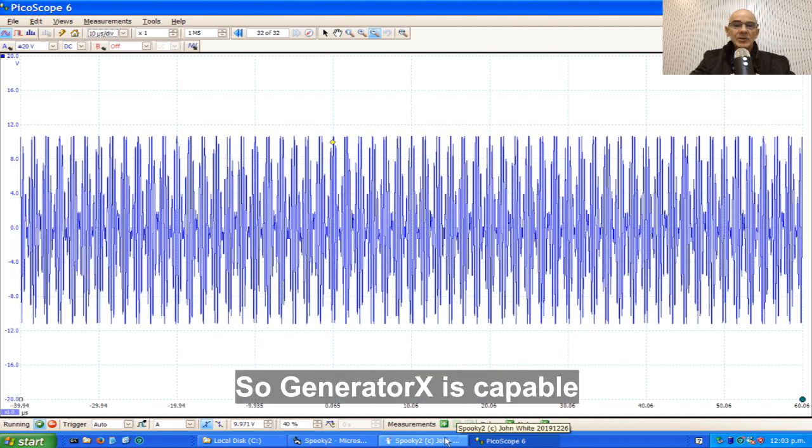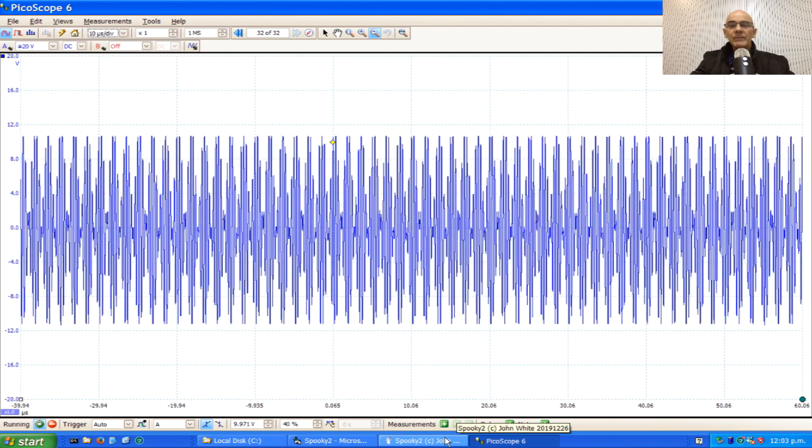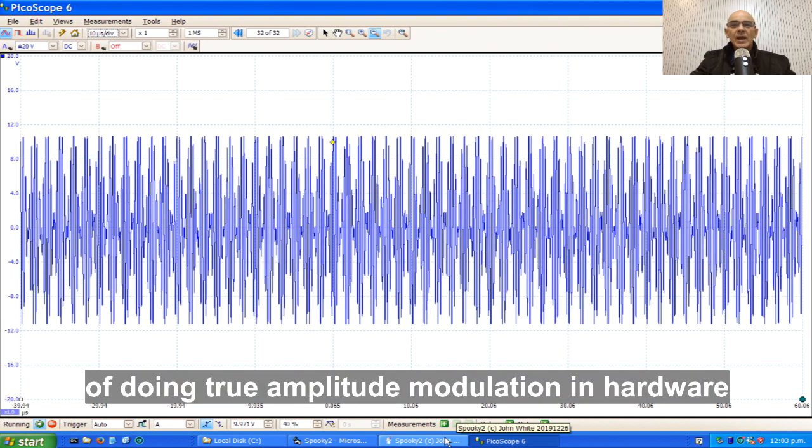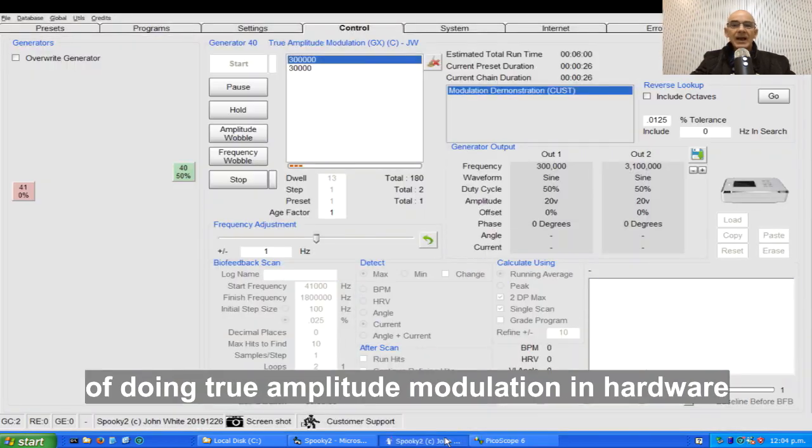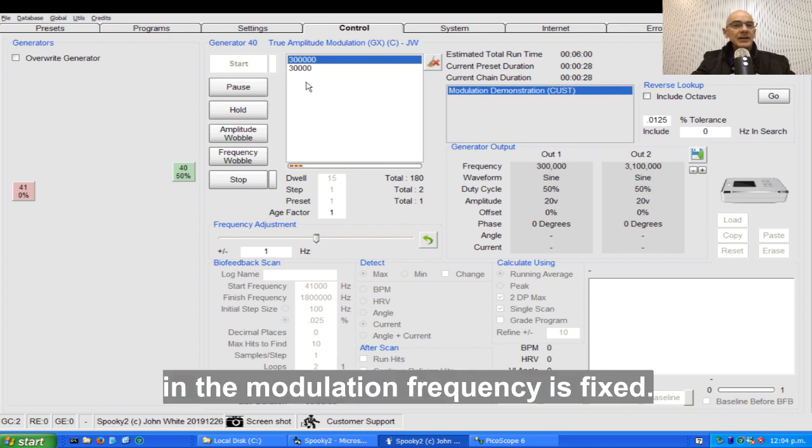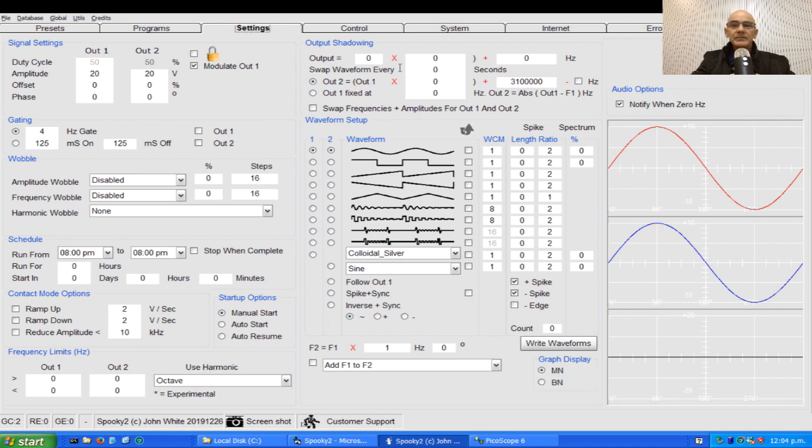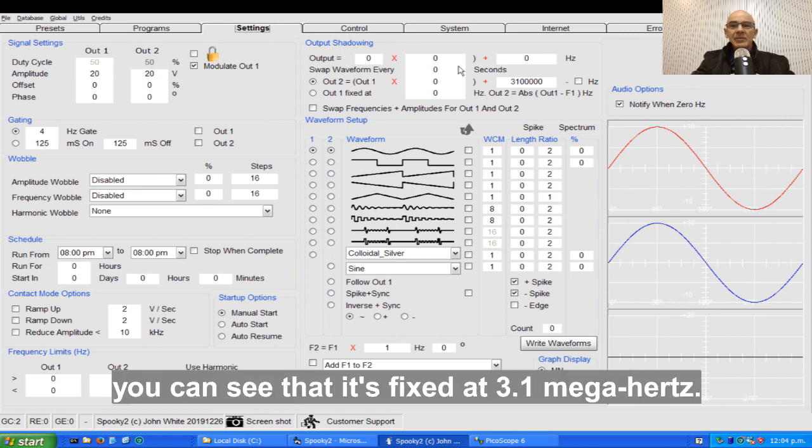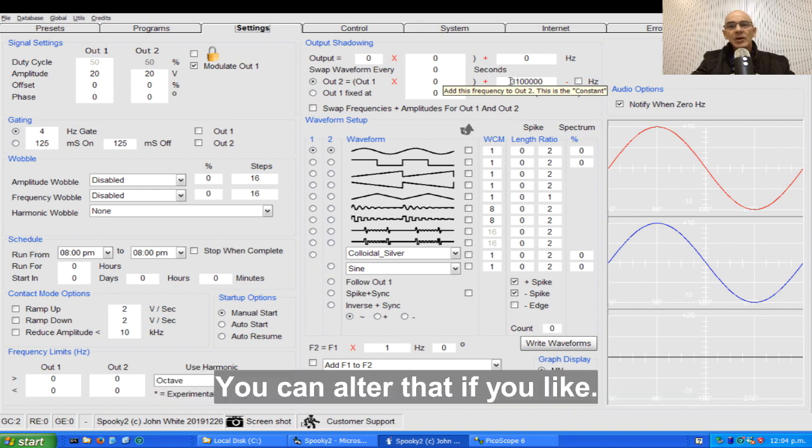So Generator X is capable of doing true amplitude modulation, and the modulation frequency is fixed. If you go to the settings tab, you can see it's fixed at 3.1 megahertz. You can alter that if you like.